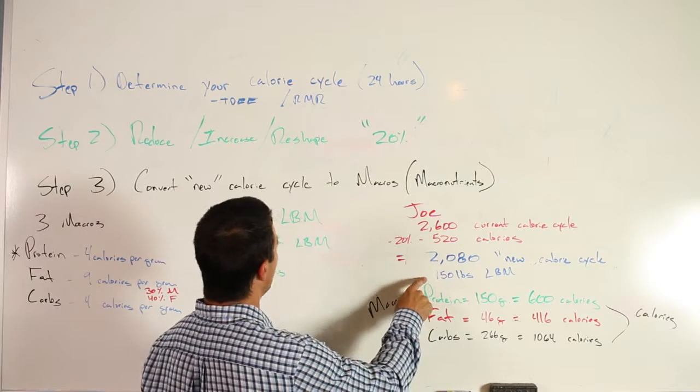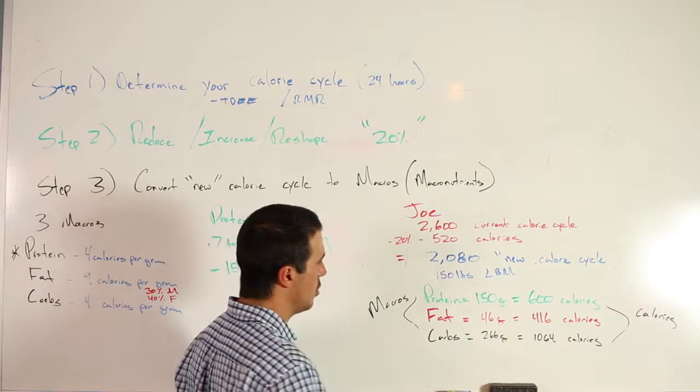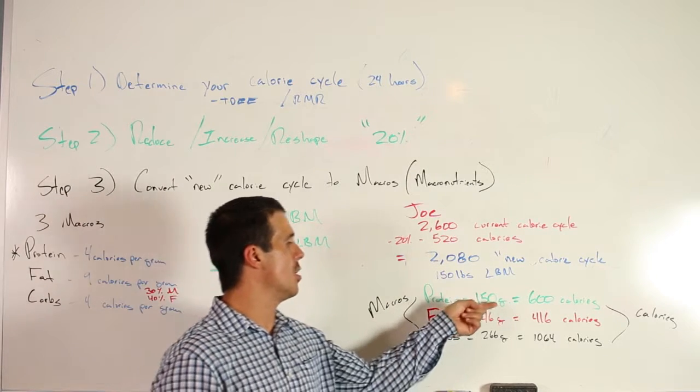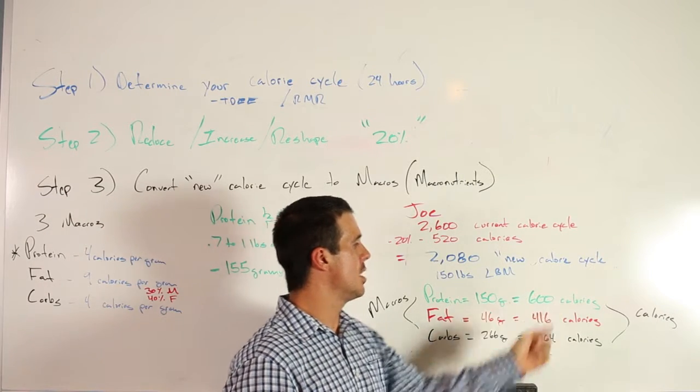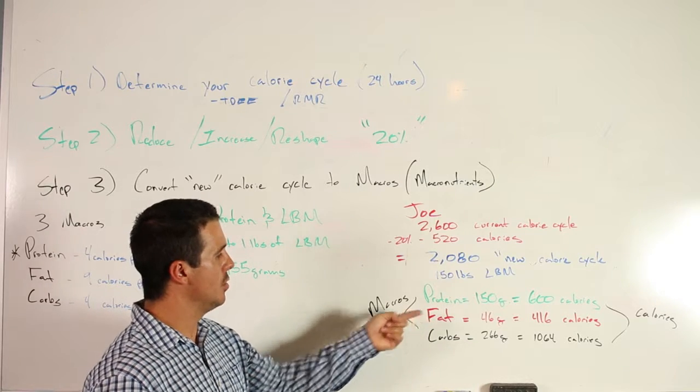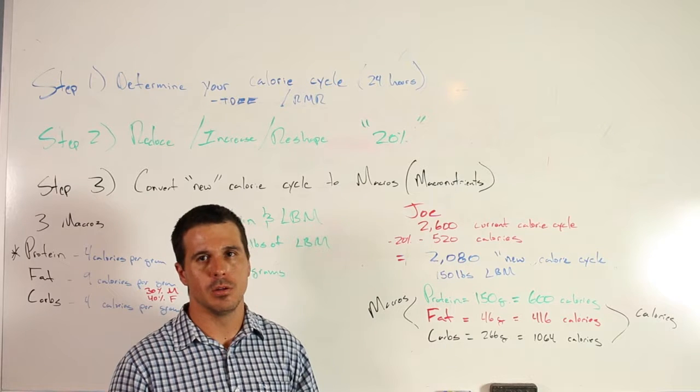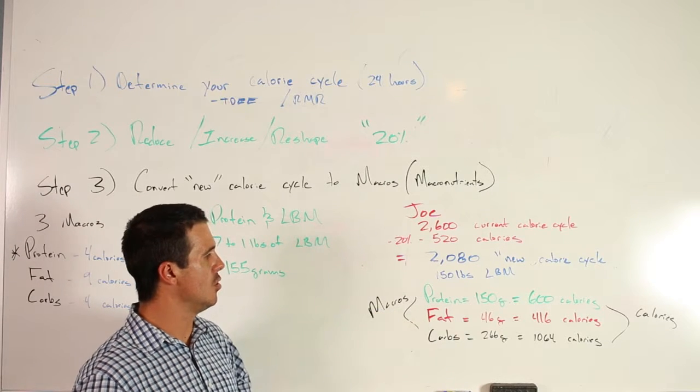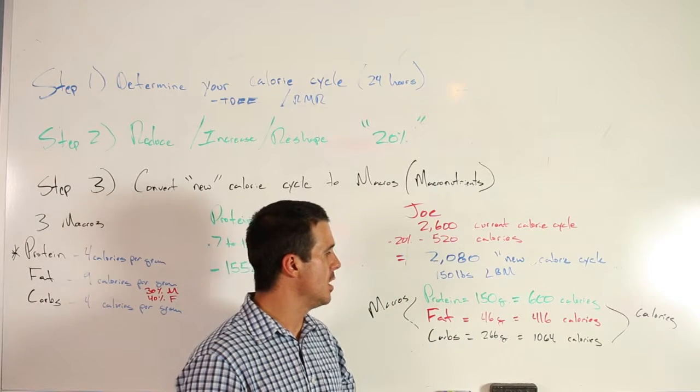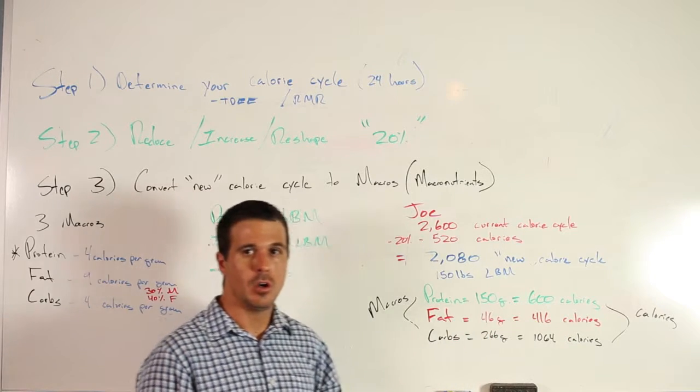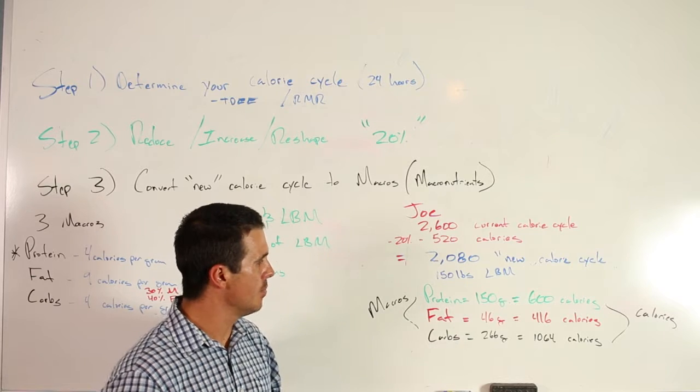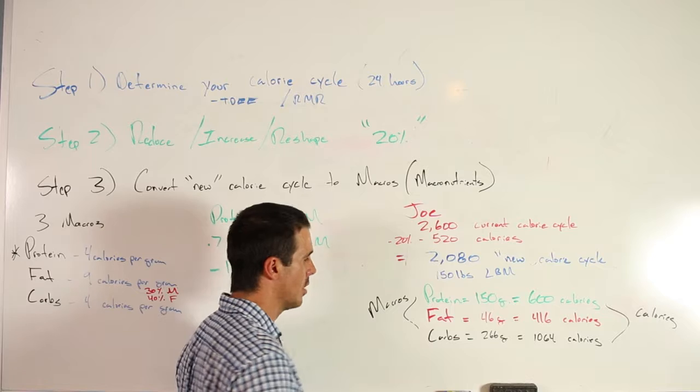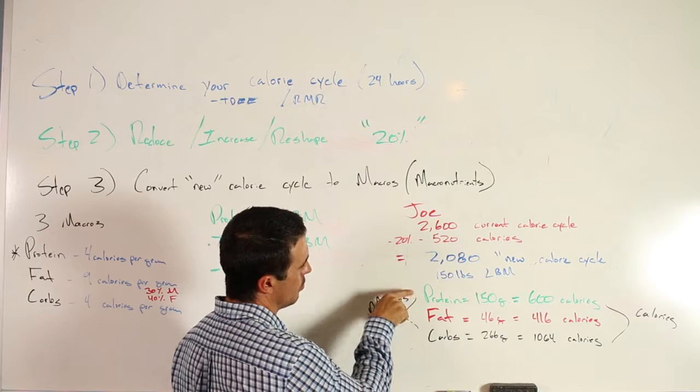Joe's new current calorie cycle is 2080 calories and he has 150 pounds of lean body mass. We're going to convert that into macros. Joe wants to be one pound of his lean body mass for protein, which is 150 grams of protein. We know that protein is four calories per gram, so we take 150 grams of protein times four, that's going to give us 600 calories. Now we move on to fat - the good fat. For men it's typically about 30%, with women it's 40%. You can fluctuate a little bit, but to keep things moving I kept Joe's at 30%.